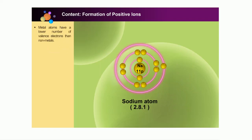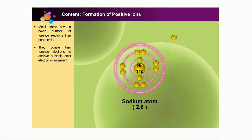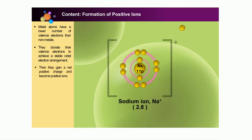Metal atoms have a lower number of valence electrons than non-metals. They prefer to donate their valence electrons in order to achieve a stable valence electron arrangement — the octet. By donating the valence electrons, they gain a net positive charge and become positive ions.